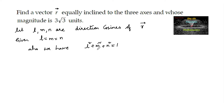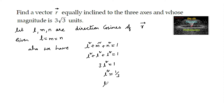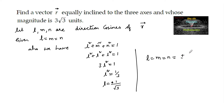Since l = m = n, we substitute to get l² + l² + l² = 1, that is 3 times l² equals 1. So l² = 1/3, and therefore l = ±1/√3. Similarly, l = m = n = ±1/√3.